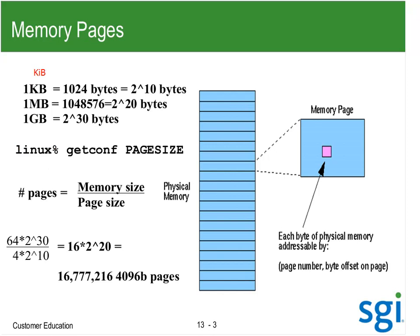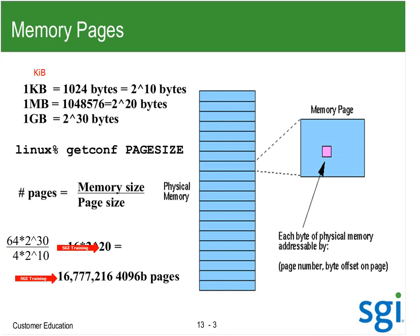The total number of pages on the system is memory size divided by page size. For example, on a 64 GB machine with a 4 KB page size — that's 4 times 2 to the 10th — and a gig is 2 to the 30th. Dividing 4 into 64 gives 16, and subtracting 10 from 30 gives 2 to the 20th, yielding 16 million 4 KB pages. When we reference memory, we get a page number and a byte offset. With many 4 KB pages, that could introduce lots of TLB misses.